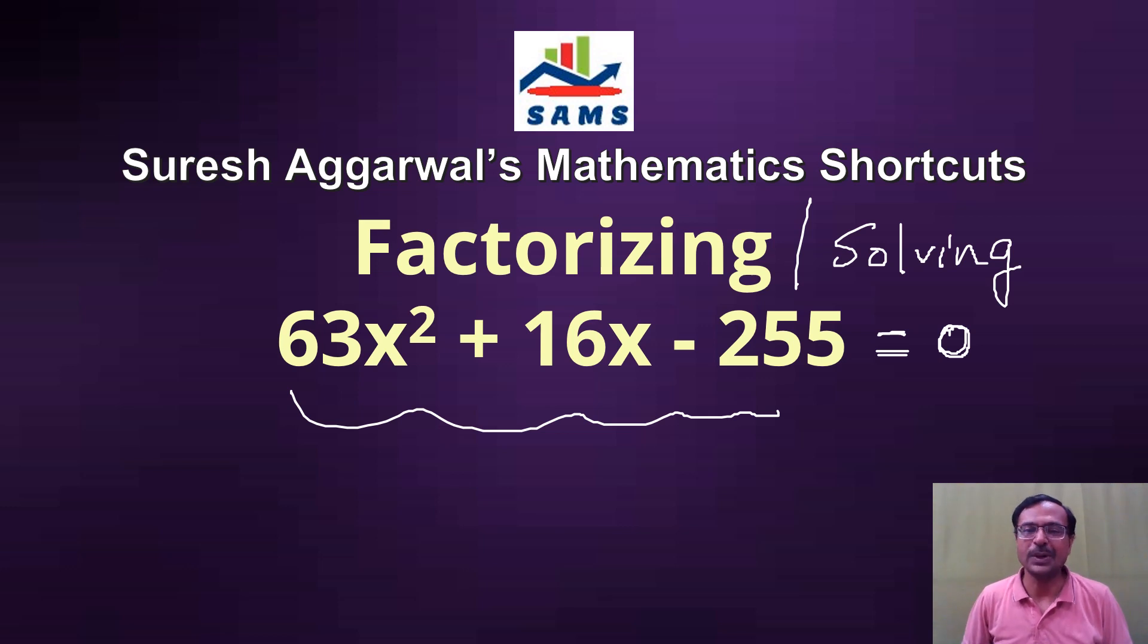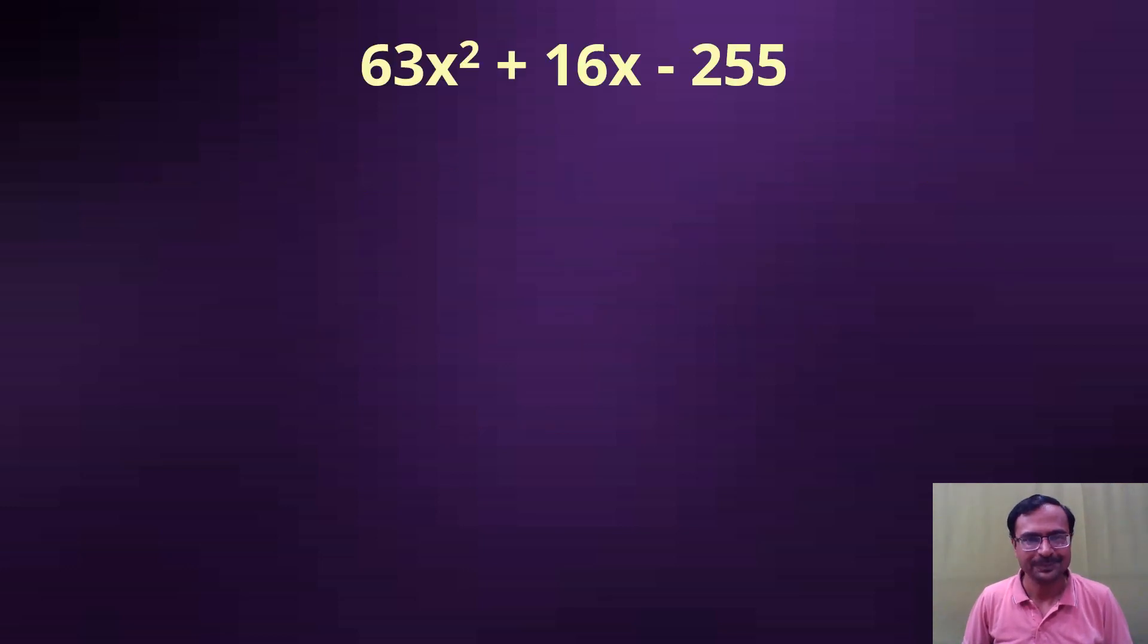You can see the coefficients here: 63, 16, and 255. They are huge coefficients and splitting the middle term can really consume so much time. But with little bit of patience and little bit of smart work, you are through. Let's see how.